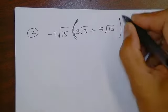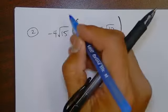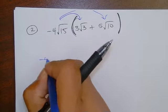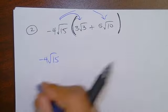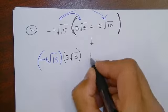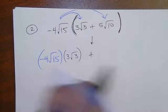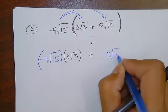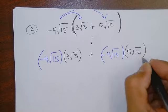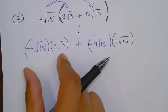We know that this parentheses means multiplication, but when you have an expression, you have to distribute. So the negative 4 root 15 is going to be multiplied to the first term plus, and then the negative 4 root 15 is also going to have to be multiplied to the term after that. And if there was more, you would do it again, but it's only 2.